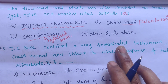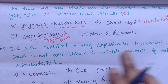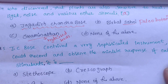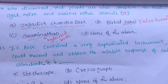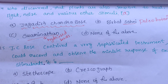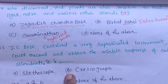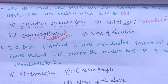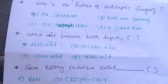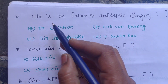The next question: JC Bose contrived a very specialized instrument which could record and observe the minute response to external stimulants. That instrument is the Crescograph. The crescograph is useful to record the minute response of external stimuli. The stethoscope is useful for hearing the heartbeat.